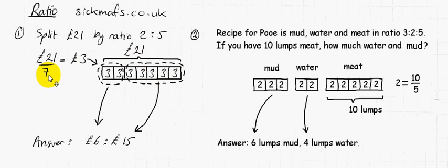£21 divided by 7 is £3. So you can see 3, 3, 3, 3, 3, 7 times, and I take 2 of my £3 and say that makes £6, and I take 5 of my £3 and say that makes £15.